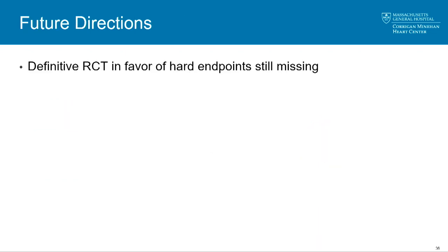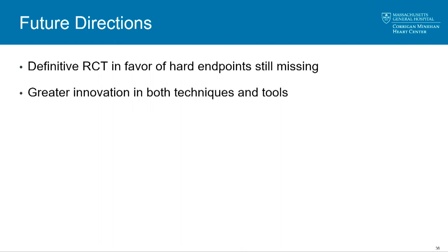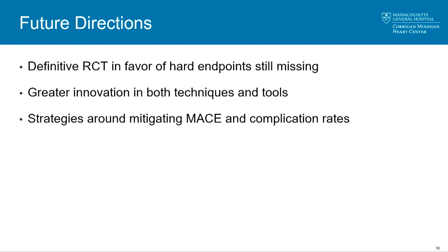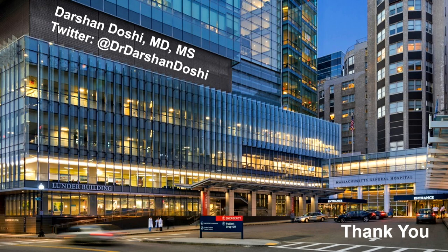In the interest of time, what we still need is a definitive RCT with hard endpoints — we still don't have that. ISCHEMIA-CTO and NOBLE-CTO are ongoing trials that will hopefully answer this. We need continued innovation in techniques and tools to make the procedure safer and quicker, and to reduce MACE and complication rates, since CTO PCI is associated with worse short-term outcomes compared to conventional PCI. We also need analysis around CTO PCI training.